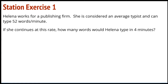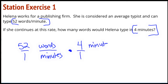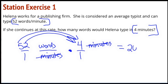Helena works for a publishing firm. She's considered an average typist and can type 52 words per minute — my brain just screamed at me: rate! If she continues at this rate, how many words would Helena type in four minutes? I've got 52 over 1 as my unit rate, words and minutes as my rate unit. I'm going to scale up to 4 over 1 minutes — the minutes cancel — and I find 52 times 4: 50 times 4 is 200, 2 times 4 is 8, so 208 words.